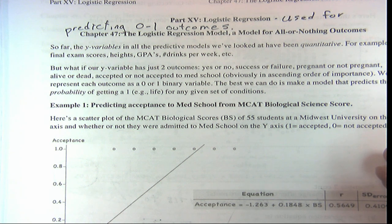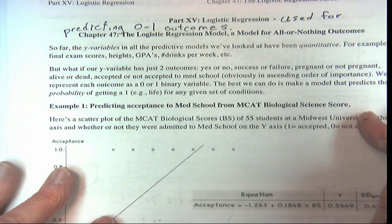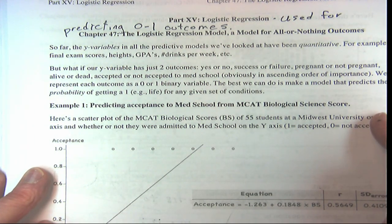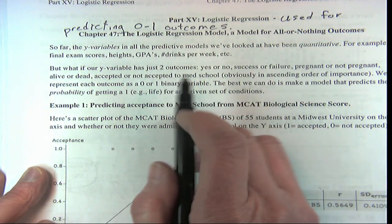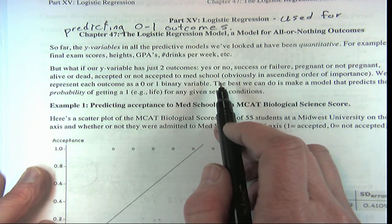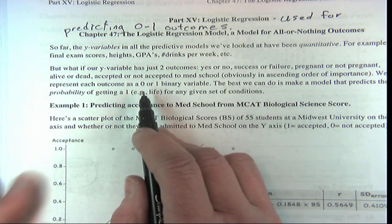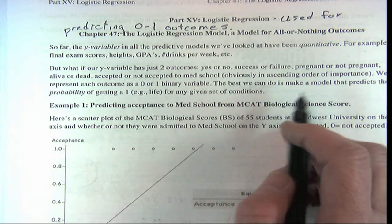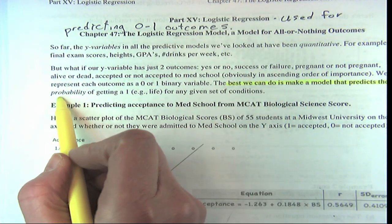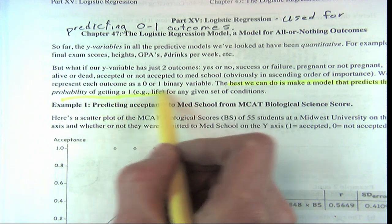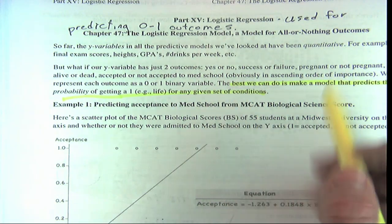A quantitative y variable is one that, if it were a survey question, you'd answer with a number — not yes or no. But very often we are interested in 0 or 1 outcomes. If our variable has just two outcomes like yes or no, and we represent it with a binary variable, really the best we can do is make a model that predicts the probability of getting a 1 for any given set of conditions — the probability of success.